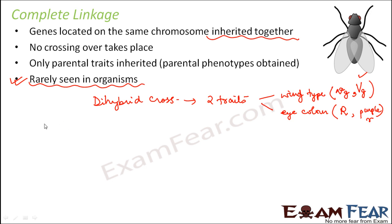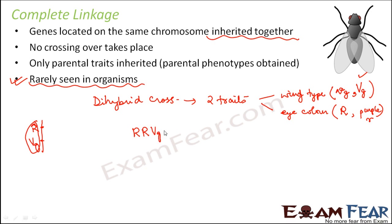If this is the chromosome with R and vg, they are completely linked and will always get inherited together. We perform a cross between homozygous red-eyed normal wing Drosophila.